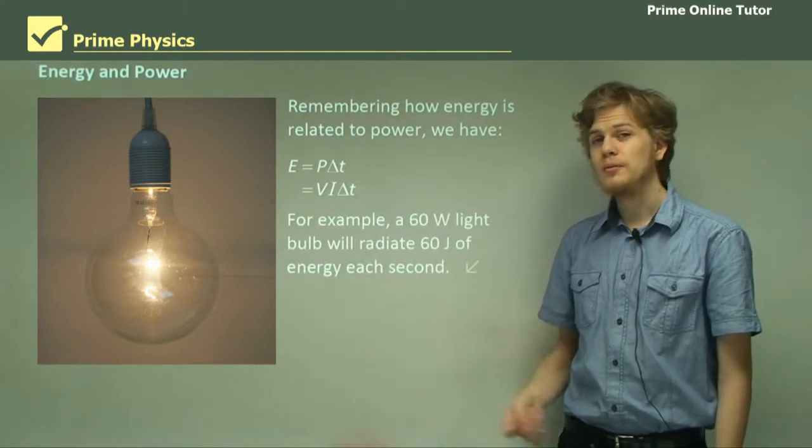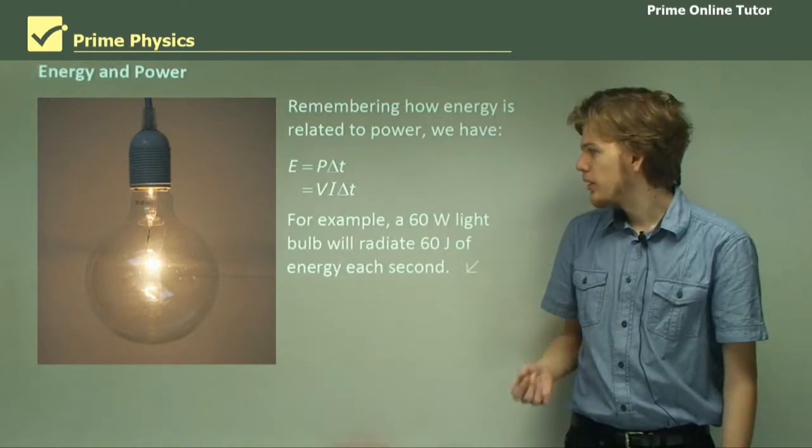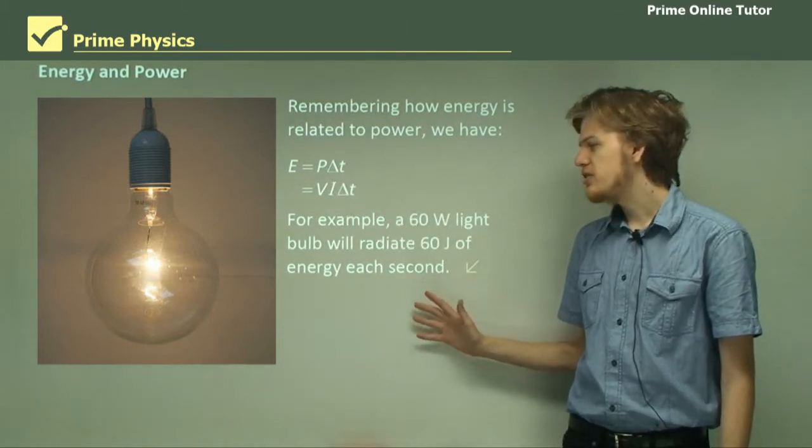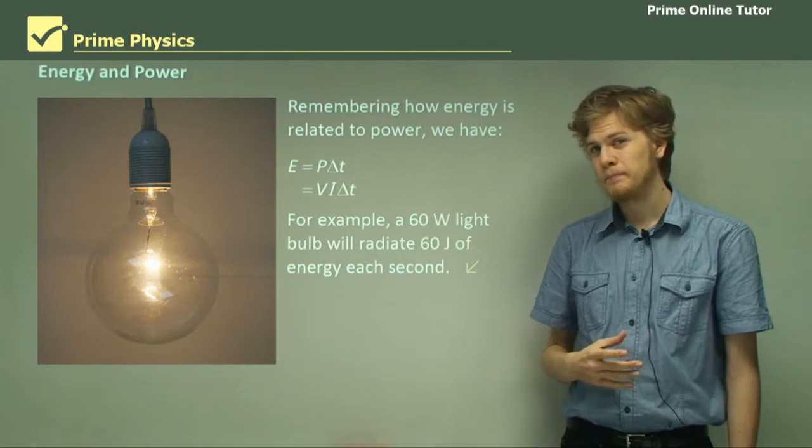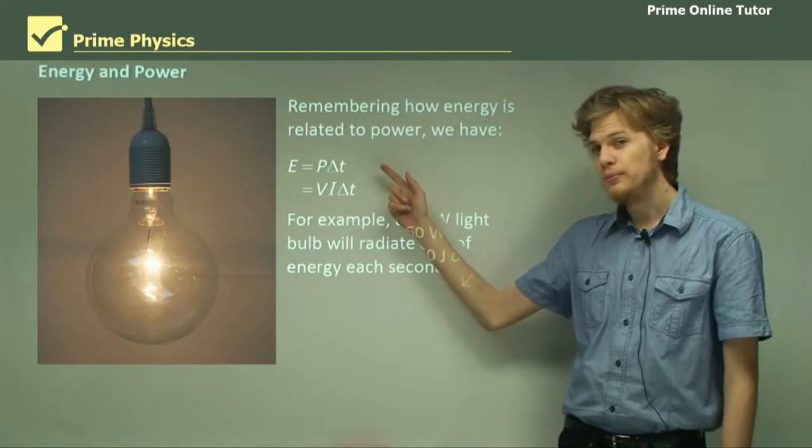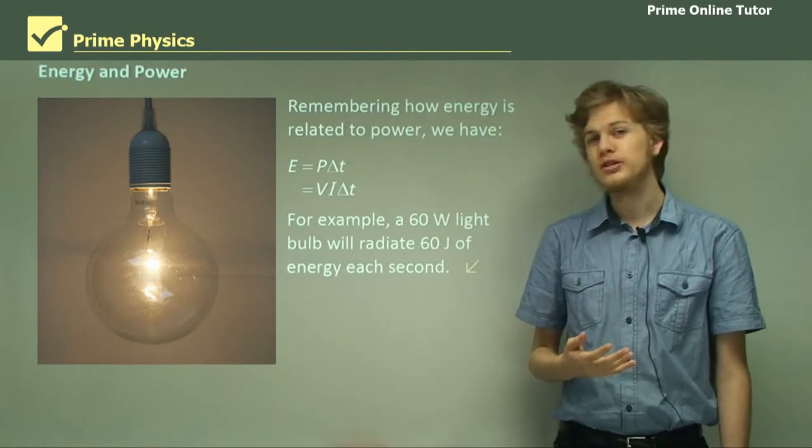So if we take, for example, a 60-watt light bulb, which has a power of 60 watts, then it will radiate 60 joules of energy every second. If we wait 2 seconds, then delta T will be 2, so it will radiate 120 joules instead.